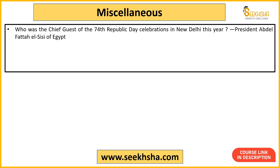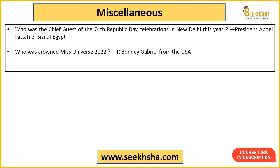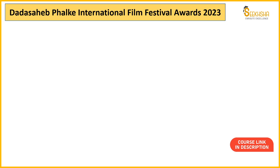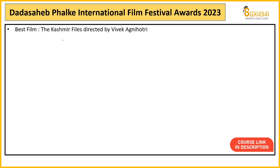The Chief Guest at the 74th Republic Day was President Abdel Fattah el-Sisi of Egypt — discussed in detail in current affairs lectures. Miss Universe 2022 was R. Bonnie Gabriel from the US. The district in India declared as the first Constitution Literate District is Kollam in Kerala, where people have knowledge of their rights and duties. Dadasaheb Phalke Awards were announced in 2023; previous year UPSC, EPFO, CDS, and CAPF papers have asked questions from International Film Festival Awards.